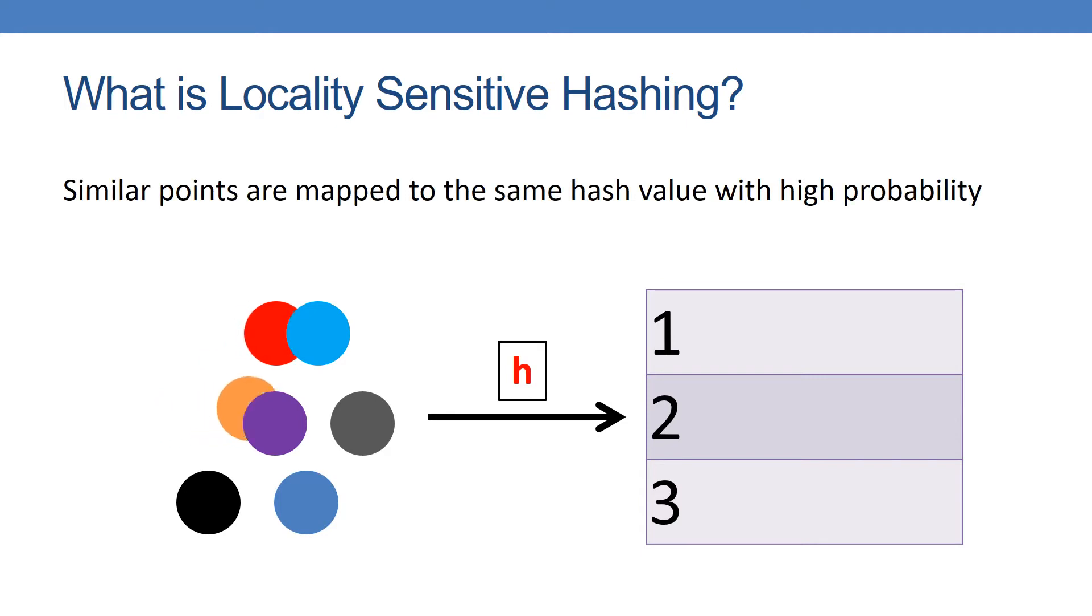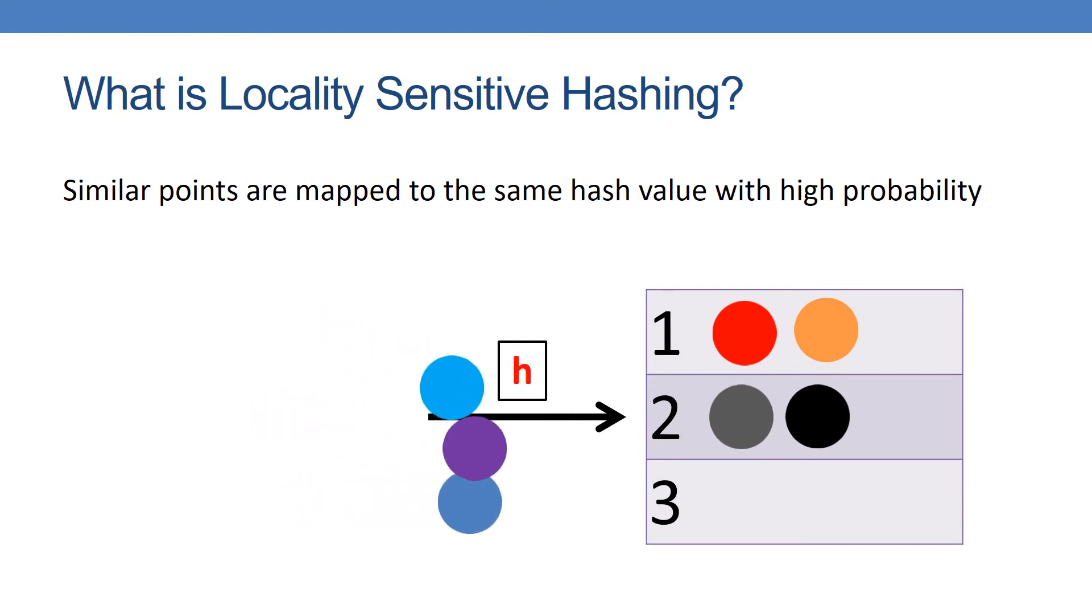First, the red and orange balls would fall into the first bucket. Next, the black and gray balls would fall into the second bucket. Finally, the blue and purple balls would fall into the third bucket.